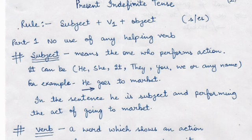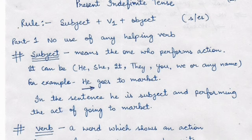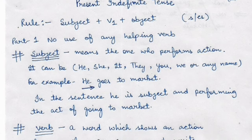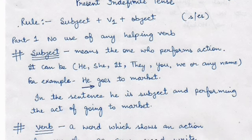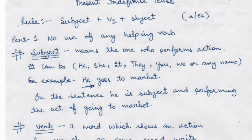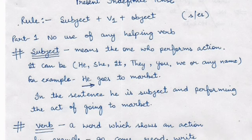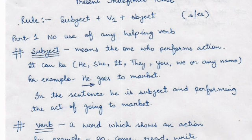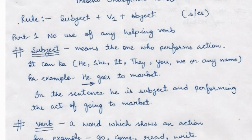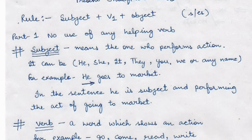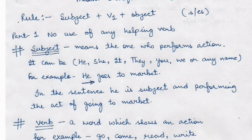Let's get started with the present indefinite tense. The rule is: subject plus first form of verb plus object. Part one of the rule is no use of a helping verb. Students mostly make mistakes by putting a helping verb in this tense, like 'I am go to school' or 'she is go to school' or 'my mother is cook food' — these are wrong sentences.